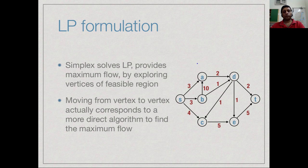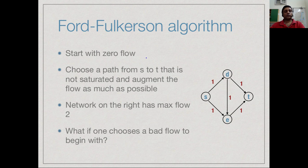To understand what this means, recall how simplex works: it starts at a vertex in the feasible region and keeps moving to adjacent vertices, increasing the flow each time. This can be interpreted directly as a flow-finding algorithm. There is an algorithm called the Ford-Fulkerson algorithm which directly solves network flow by gradually building up an optimum flow — it starts with zero flow, chooses a path with spare capacity, and augments the flow on that path until it becomes saturated.